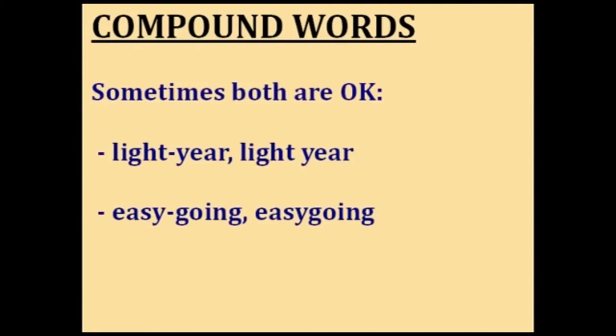Some words have more than one form. For some words, both the open form and the hyphenated forms are acceptable, as in the word light year — that's the distance that light can travel in a year, a very long way. And for some words, both the hyphenated and the closed form are acceptable, as in the word easygoing, which means relaxed.